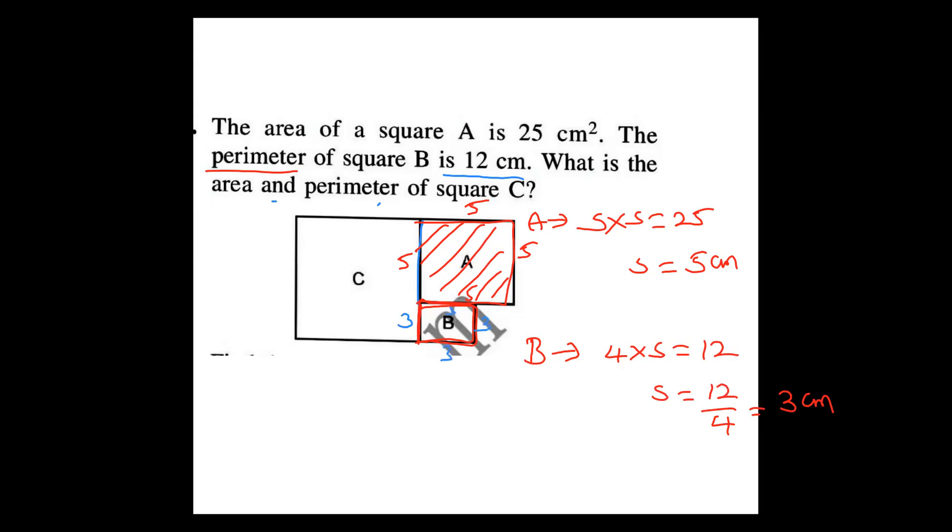Now we need to know the side of C. What will happen? 5 plus 3 equals 8. It is a square. The perimeter of square C: 4 into side is 4 into 8, which is 32 cm. And area of C: side into side, 8 into 8, is 64 cm square. This is the method of doing the sum. Thank you.